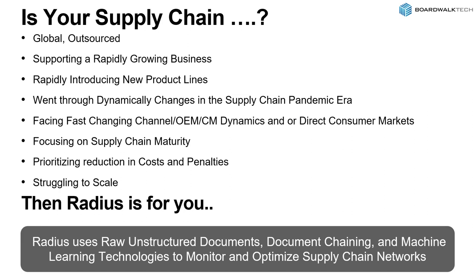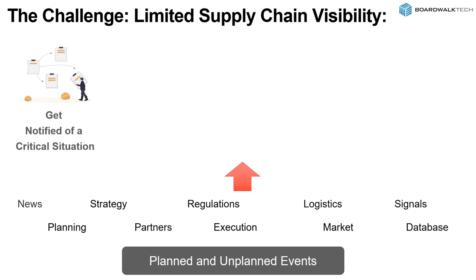Radius is a new type of capability. It uses unstructured documents and what we call document chaining — we'll explain this during the course of the webinar — and machine learning technologies to monitor and optimize your extended supply chain network. This works not only inside your business, but across your extended value chain in order to get your products to market.